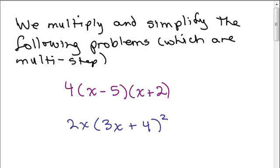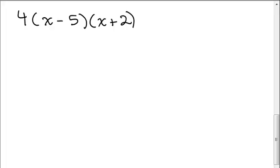On this video, we multiply and simplify the following problems. They are multi-step because it's just more than two things multiplied together. Let's say we need to simplify this polynomial. What we really have are three factors, 4 and x minus 5 and x plus 2.